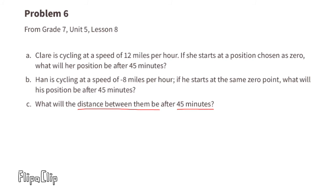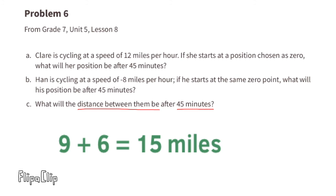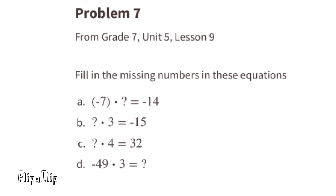Part C: what is the distance between Claire and Han after 45 minutes? If Claire rides 9 miles in the positive direction and Han rides 6 miles in the negative direction, the total distance between them is 15 miles. Think of it as the absolute value of positive 9 plus the absolute value of negative 6.